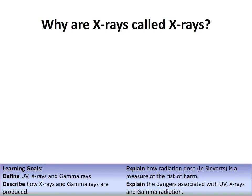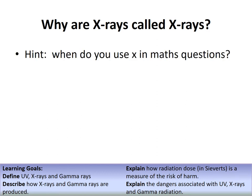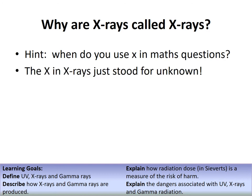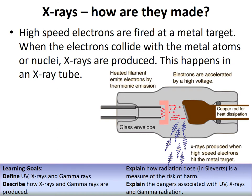Why are X-rays called X-rays? When you use X in maths, it represents an unknown. That is exactly what the X stood for - they did not know what these rays were, but knew they existed, so they called them X-rays.